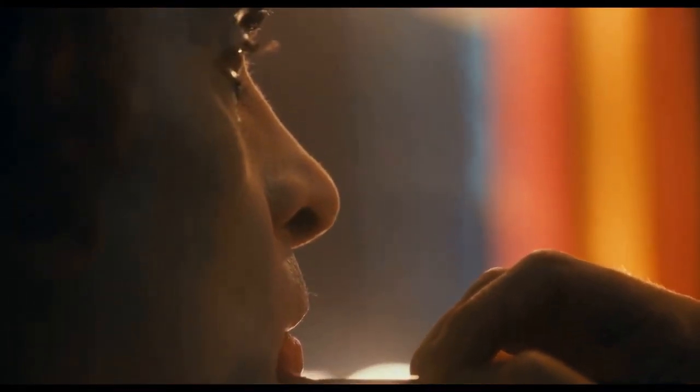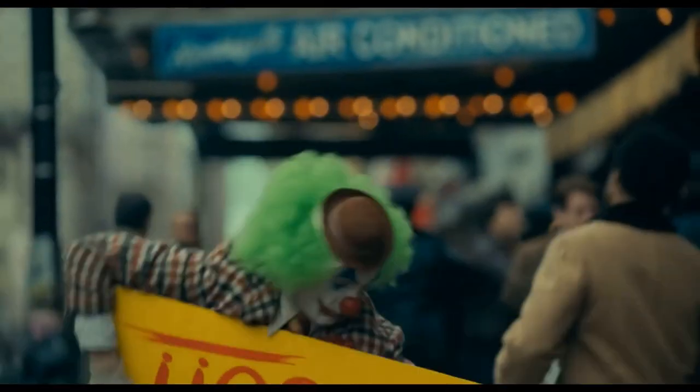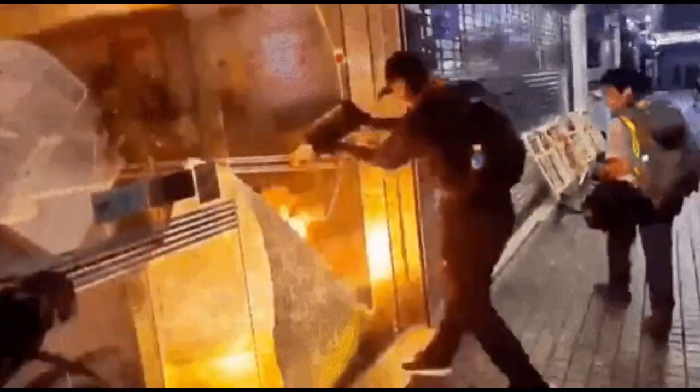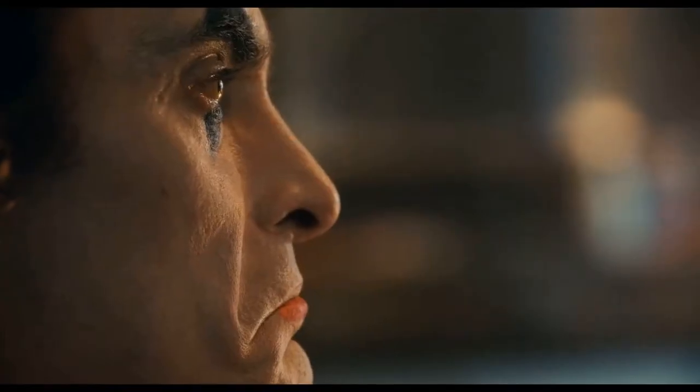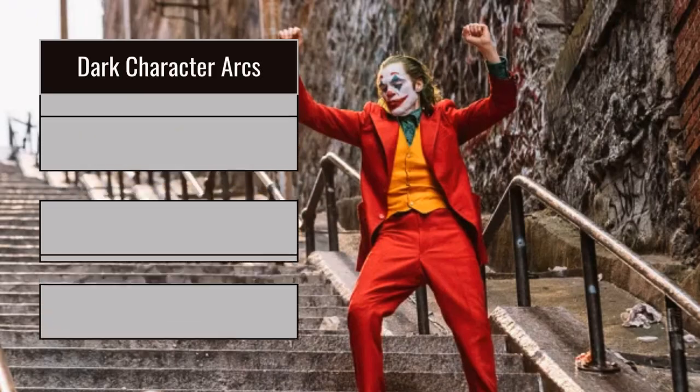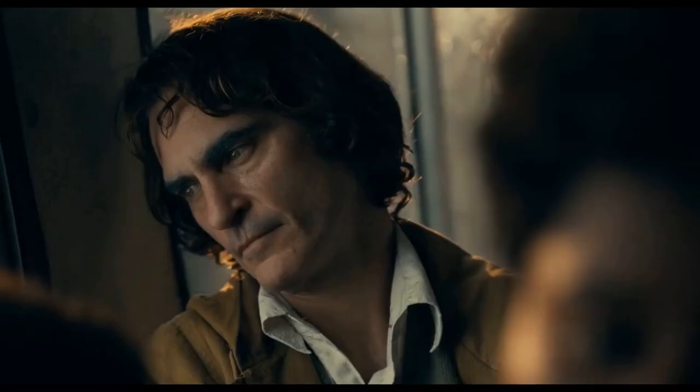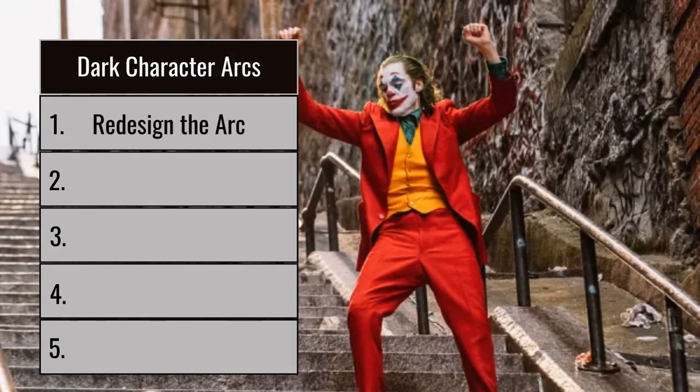Today we're going to turn back the clock to the ancient year of 2019 and take a look at Joker — a movie which was a prediction for society in the upcoming year, an amazing character study for one of the most iconic villains in history, and a phenomenal point of reference for my new therapist, Dale. More specifically, we're going to focus on five points on how to make a good character like Arthur Fleck change for the worse, starting with point number one: changing the shape of our character arc.